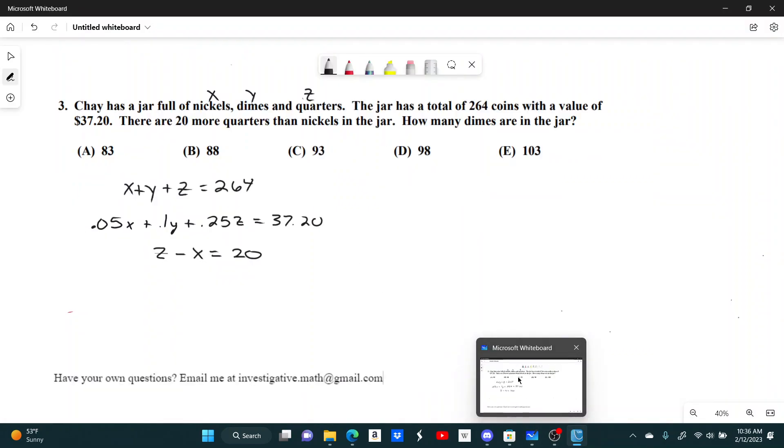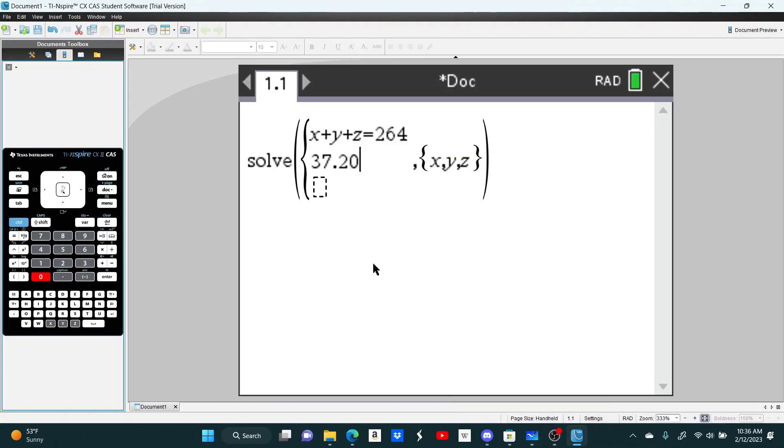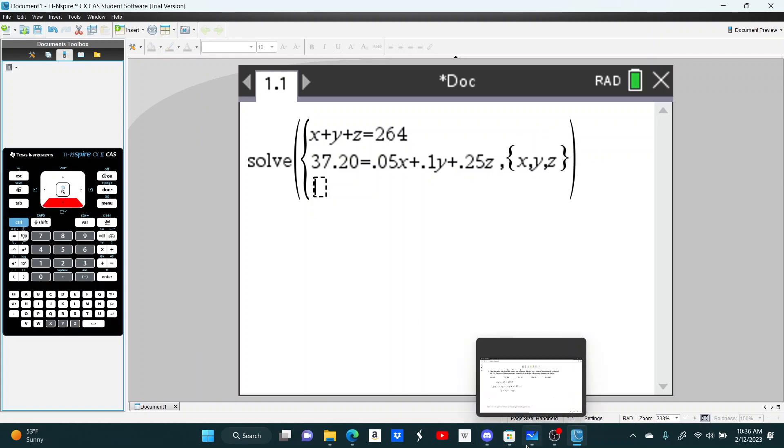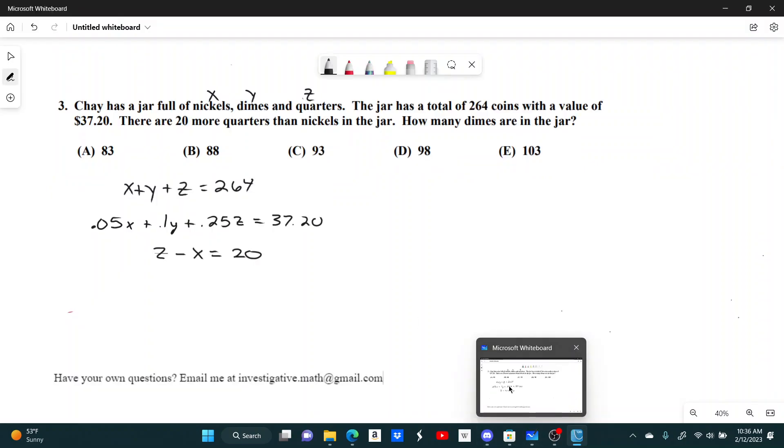Then 0.05x plus 0.1y plus 0.25z equals 3720. So 0.05x plus 0.1y plus 0.25z. And our last equation: there are 20 more quarters than nickels, so z minus x equals 20.